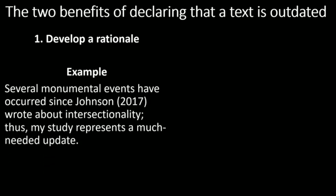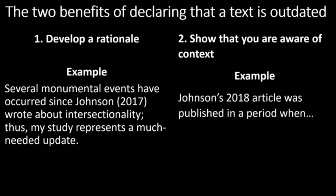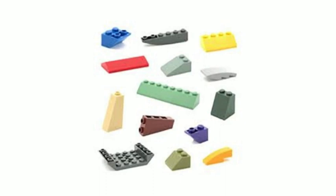There are two benefits of declaring a text outdated. Number one: it helps you develop a rationale — you can distinguish your assignment by stating that your work is an update. For example: 'Several events have occurred since Johnson wrote about intersectionality; thus my study represents a much-needed update.' Number two: it shows that you are aware of the context — you understand what came before the article was written, what was happening during that time, and what happened after. Think about the universe around the journal article.